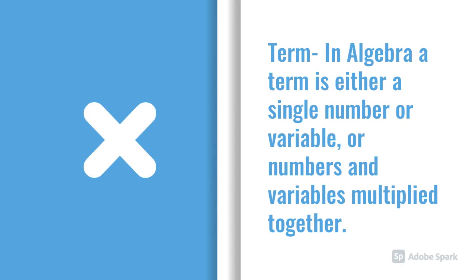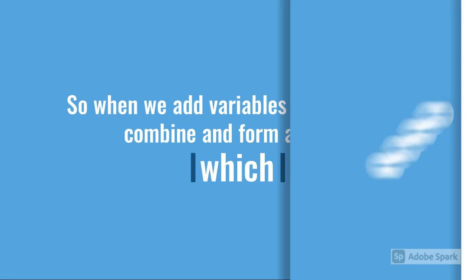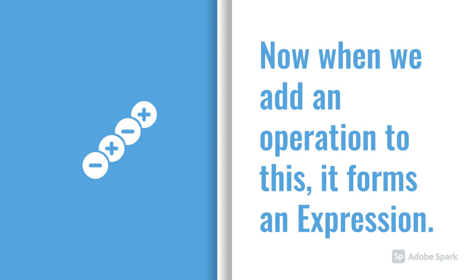What is a term? In algebra, a term is either a single number or variable or many numbers and variables multiplied together. So when we add variables together, they combine and form a term. x plus x is 2x which is a term. Now, when we add an operation to this, it forms an expression.